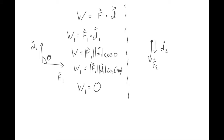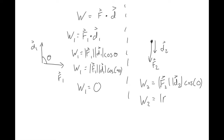In the second example, work two involves force two and distance two. Because these vectors are in the same direction, the angle between them is zero. The cosine of zero equals one, so we just multiply the magnitudes of the two vectors together.